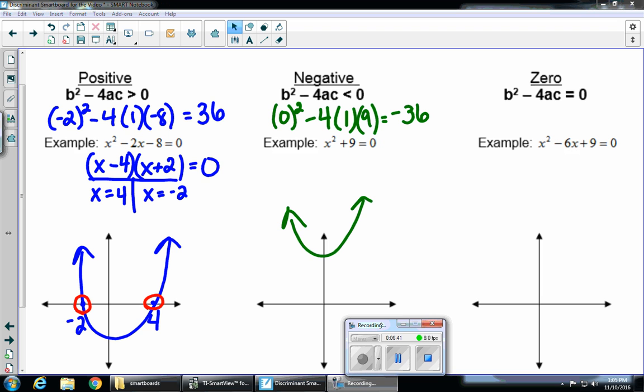And now let's take a look at our last case. b squared minus 4ac equals 0. So when we get 0 for our discriminant, we said that that will give us one distinct real root. So let's take a look at this.